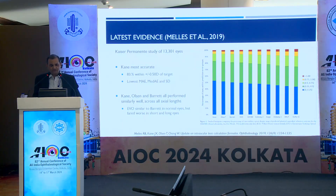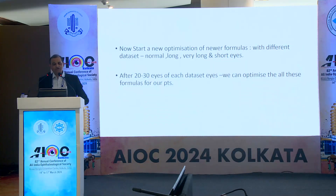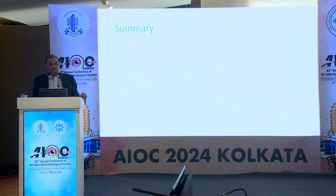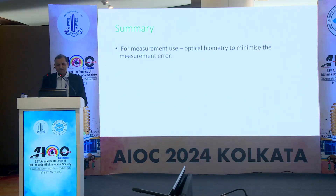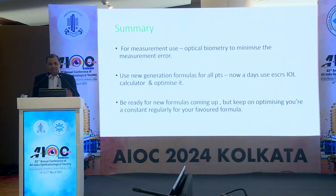In summary: for measurement, use optical biometry to minimize measurement error. Use new generation formulas for all patients. Use the ESCRS calculator and optimize it. Be ready for newer formulas coming up, and keep optimizing your constants regularly for your favorite formulas. Start optimizing your own data for normal, long, very long, and short eyes — after 20 to 30 data sets each, you can optimize all these formulas to your patient population. Thank you for your attention.